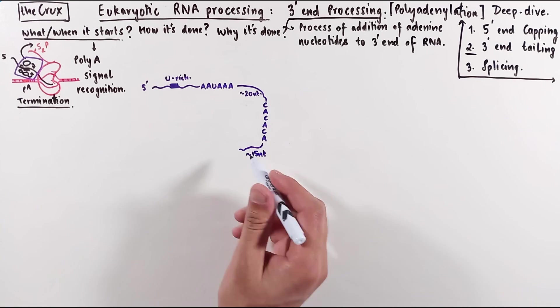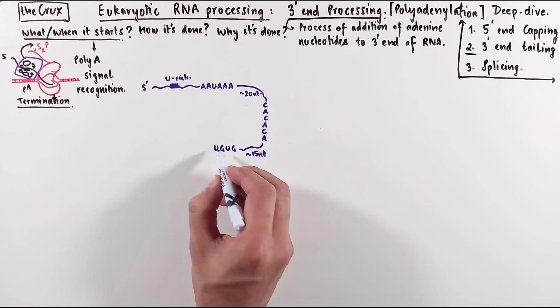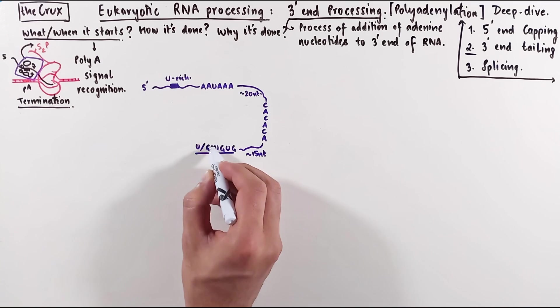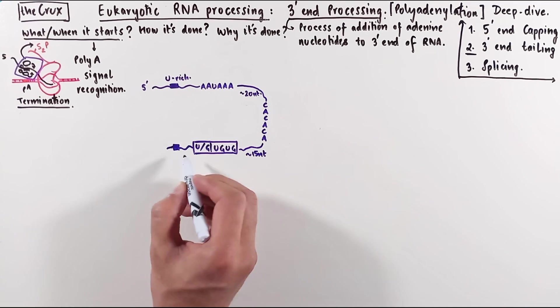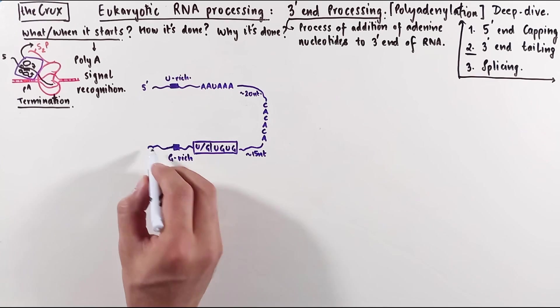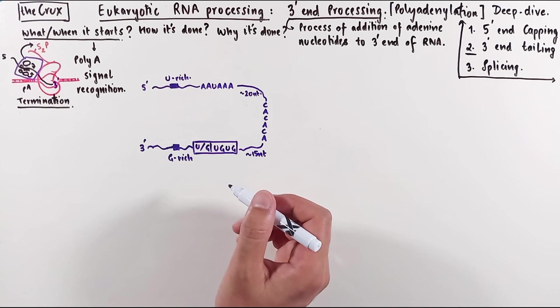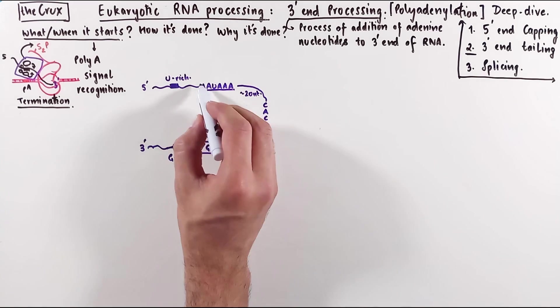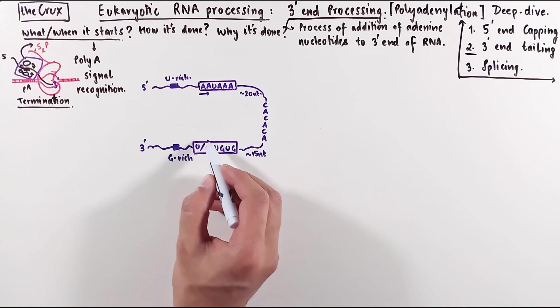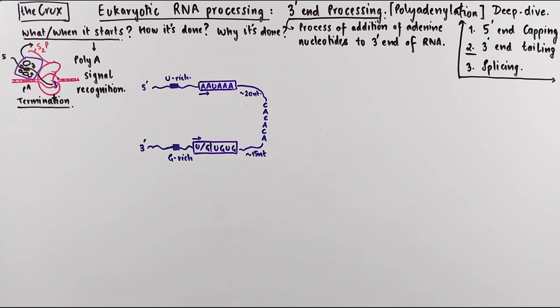Even downstream of this dinucleotide repeat region, about 15 nucleotides away, is a GU-rich sequence. And further down towards the 3' end, sometimes you can even have a GU-rich sequence. Typically, from the start of polyA signal sequence to the end of this GU-rich region is what we usually refer to as the termination and RNA cleavage sequence syntax.